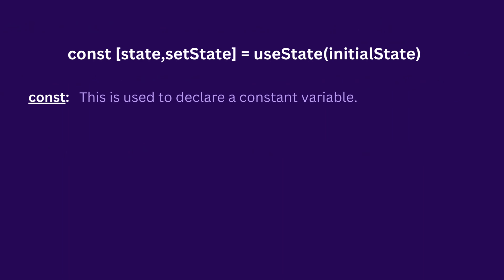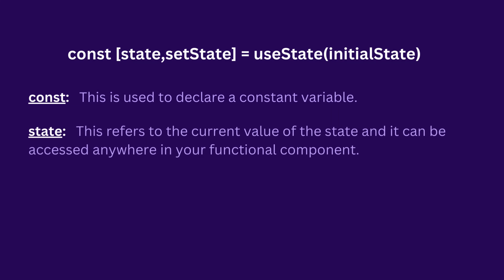The first is const. Const is used to declare a constant variable. If you do not have a good understanding of declaring variables, you can check out my article — I will leave the link in the description below. Now the next thing is the state. This refers to the current value of the state and it can be accessed anywhere in your functional component. This does not necessarily have to be called 'state' — you can call it whatever you want: name, apple, orange, whatever. It's just the name you give or assign to your state.